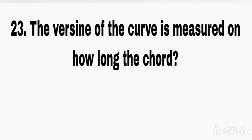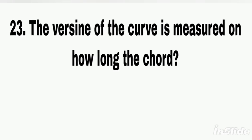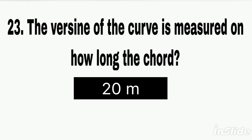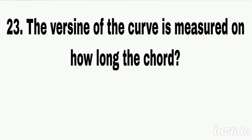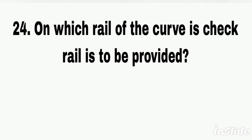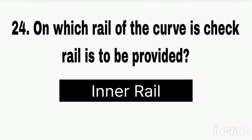Q23. The versine of the curve is measured on how long a chord? Answer: 20 meters. Q24. On which rail of the curve is the check rail to be provided? Answer: inner rail.